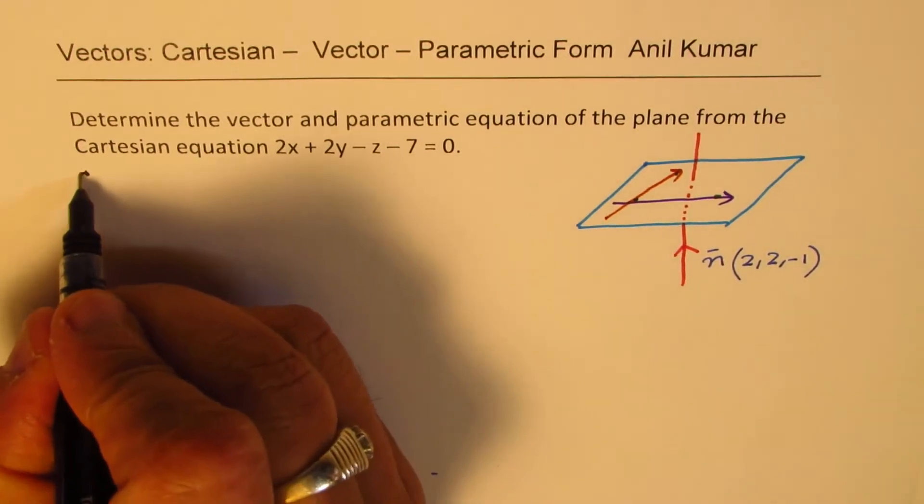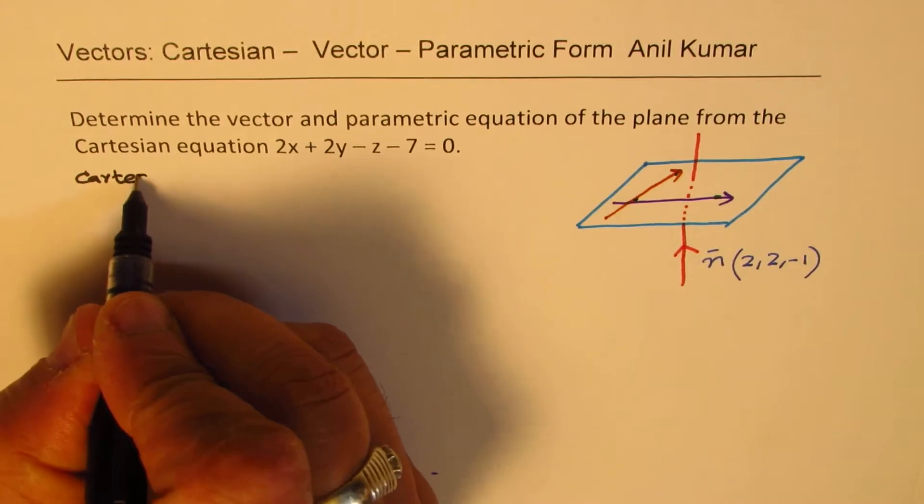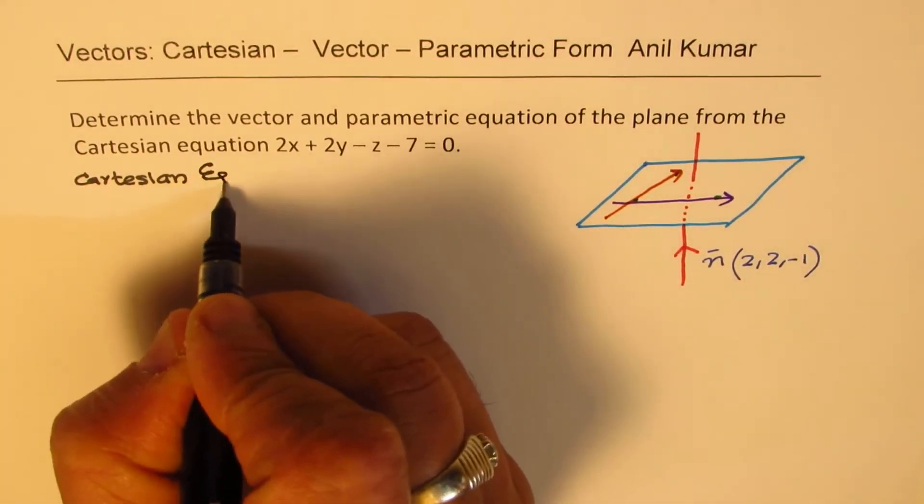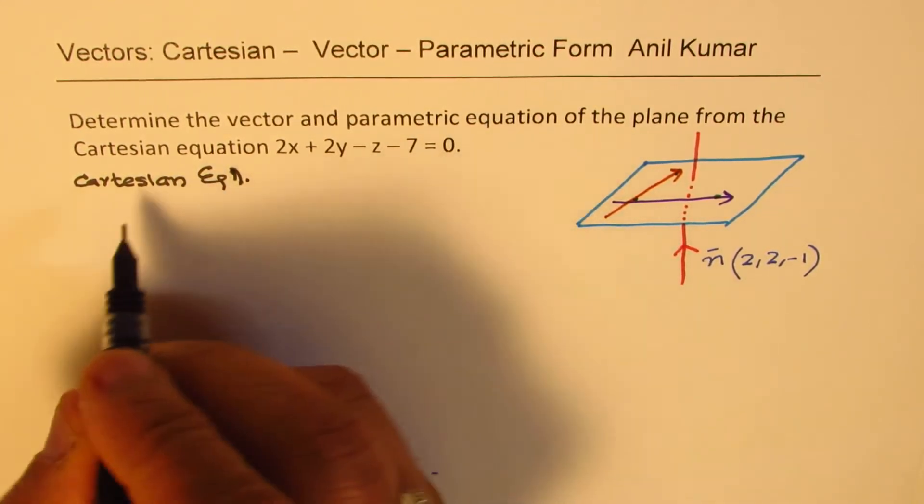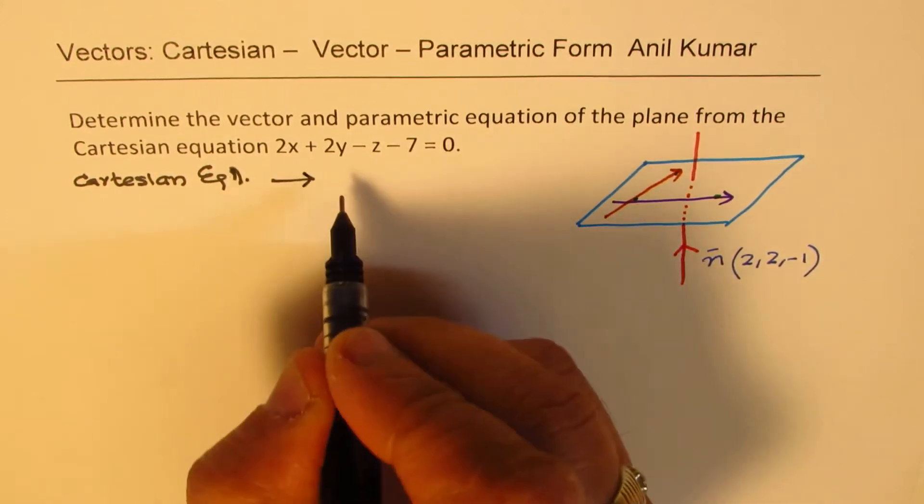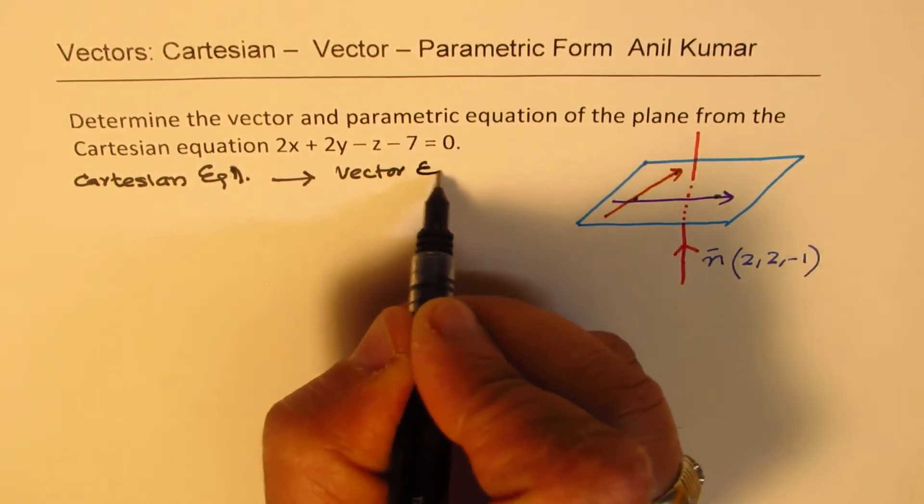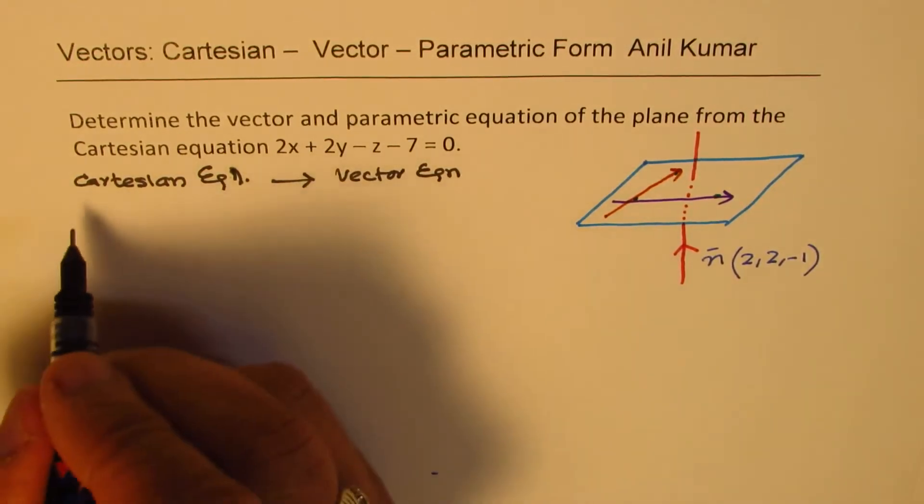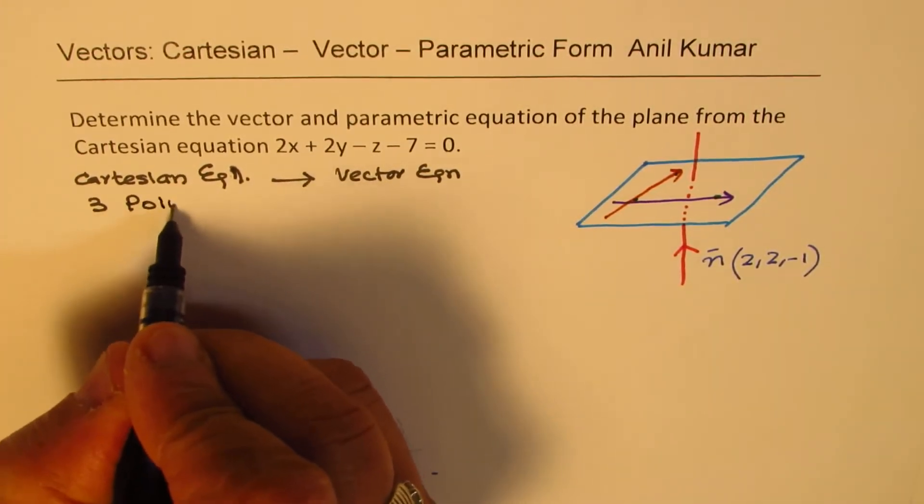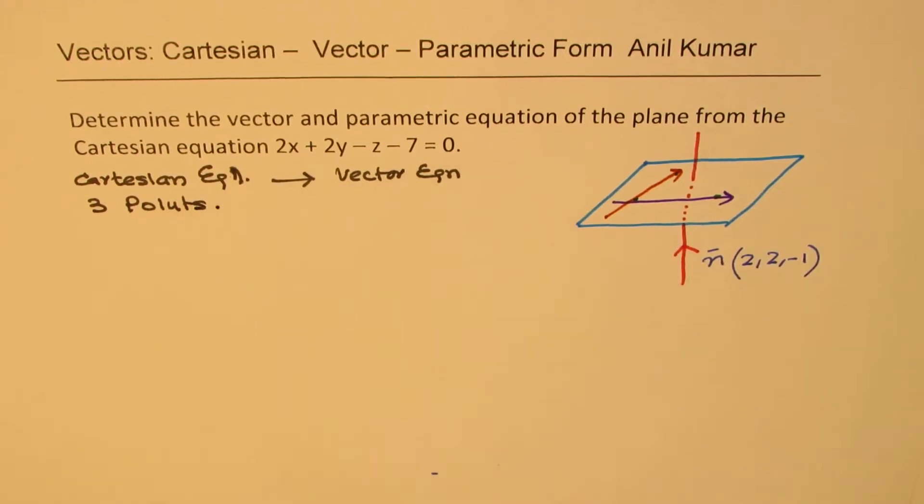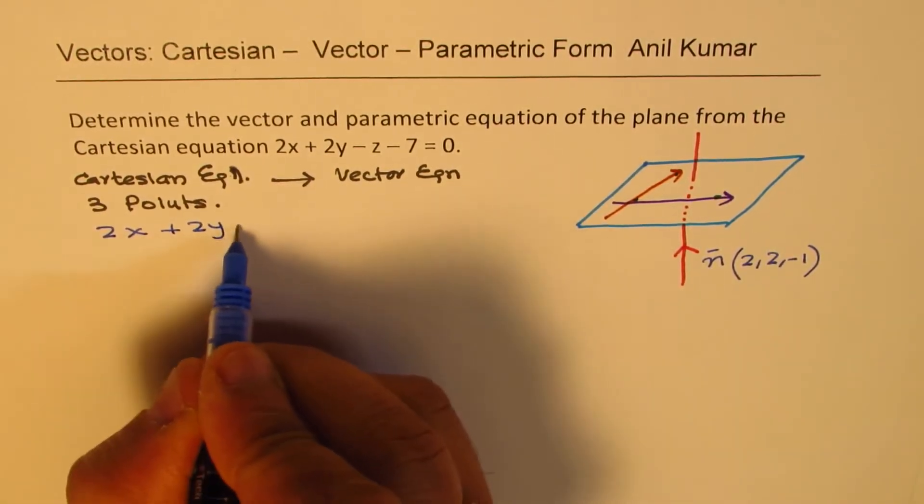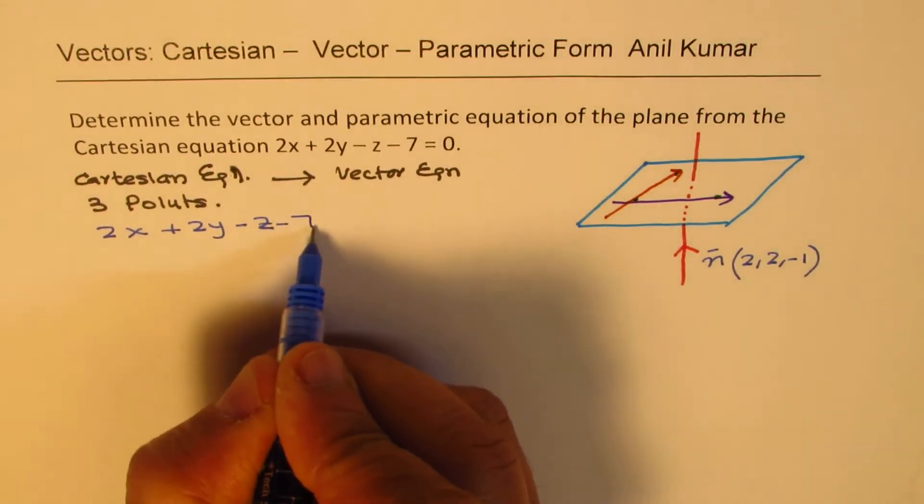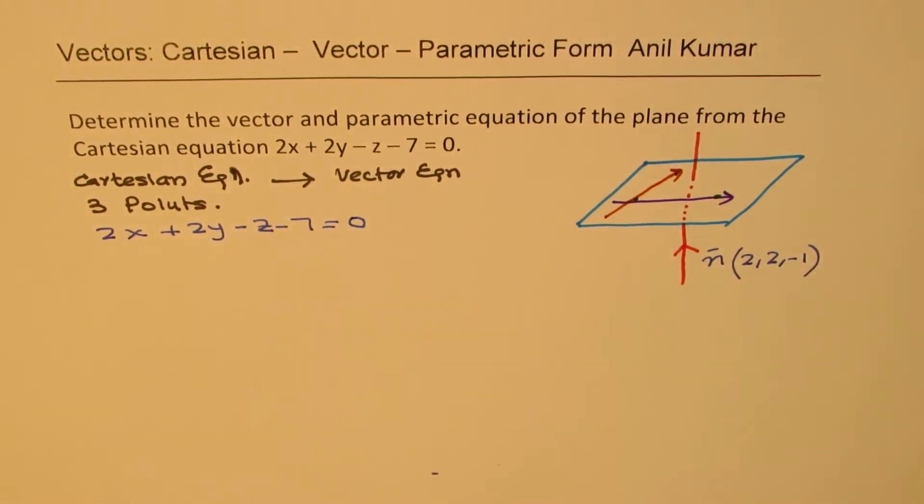First step to write a Cartesian equation. And from there to get vector equation, we should find three points. In the given form, we are given an equation, which is 2x plus 2y minus z minus 7 equals to 0. Now, a plane has infinite points.